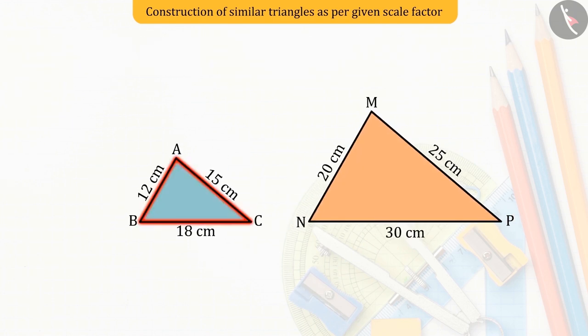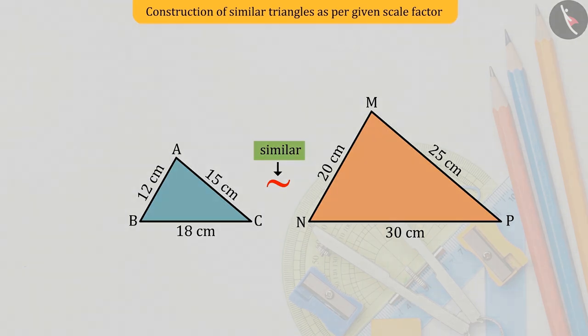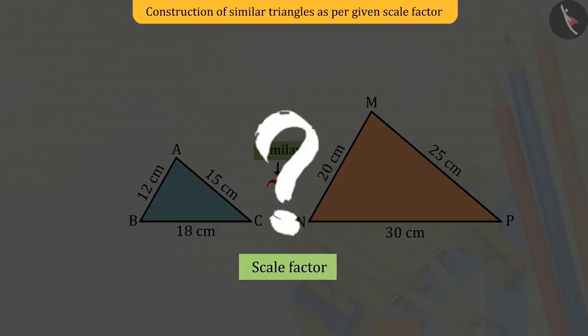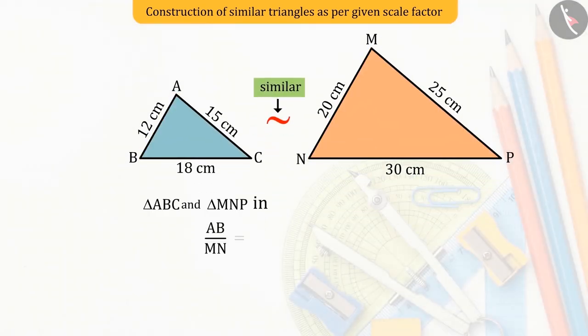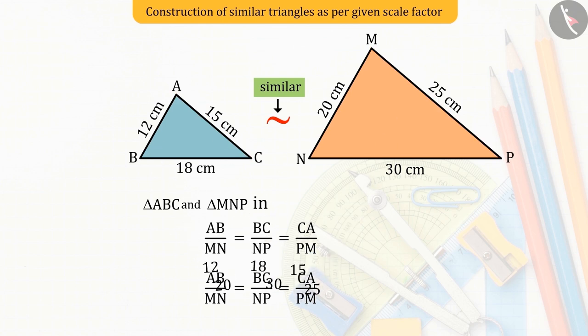Triangle ABC and triangle MNP are similar. Let's find the scale factor between these two triangles. You can see that the ratio of the corresponding sides of the two triangles is 3 is to 5.